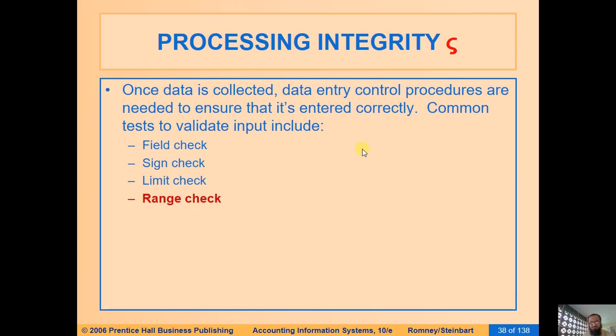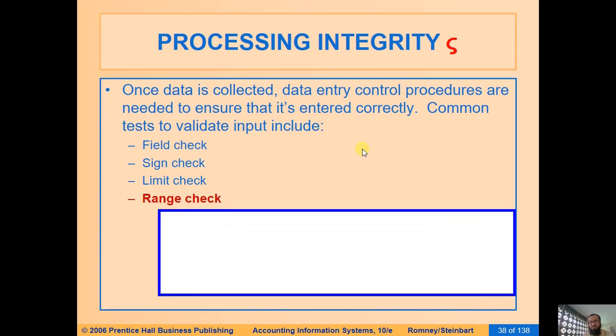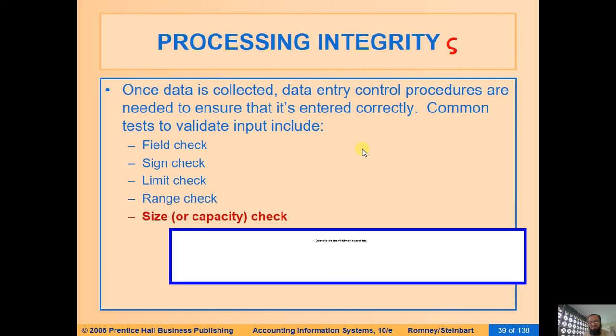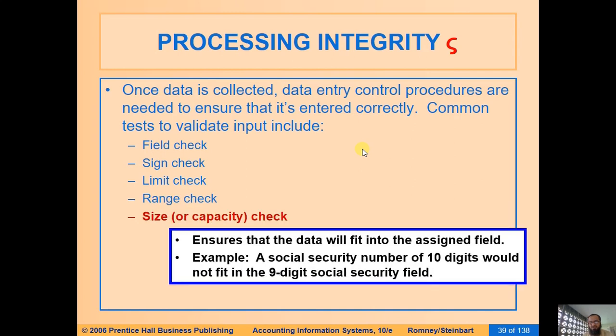The limit check is one-sided, whereas the range check is two-sided — it checks both a minimum and a maximum value. The size check is not about the numeric value but about the placeholder; for example, if a field requires five digits, it should not accept four digits.